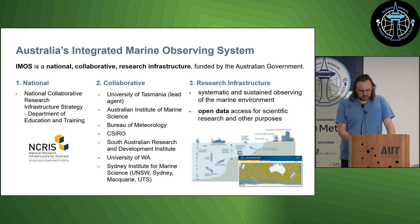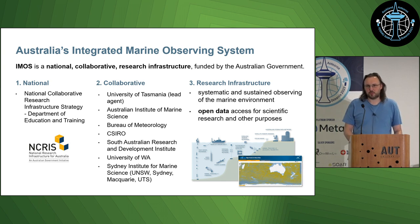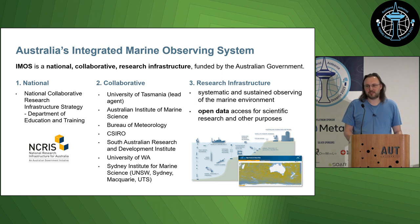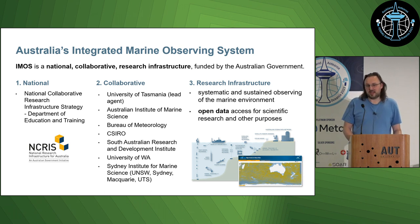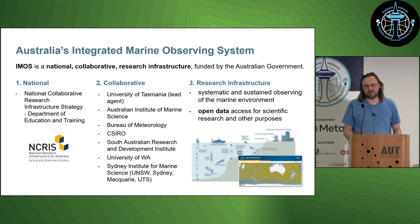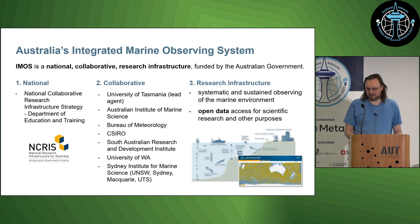The Australian Ocean Data Network is what I'm working on. Our job is to maintain that data but also to find data from other organizations around Australia that are measuring the ocean, put it all together, and make it open and accessible to scientists. Our main priority is that scientists shouldn't have to go to a million different websites — they should go to a centralized location with a high level of consistency, especially for cross-domain research.